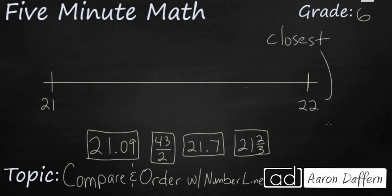So what we need to do is plot these points. We have an improper fraction, a mixed number, and two decimals. Let's see if we can put those two decimals on our number line first, then we'll worry about our fractions.